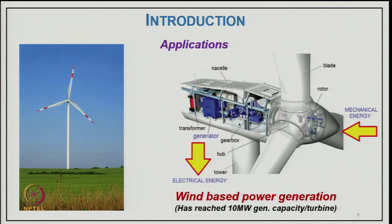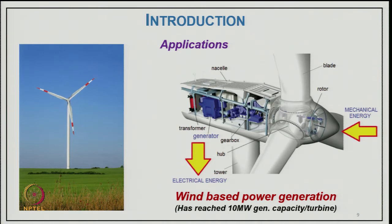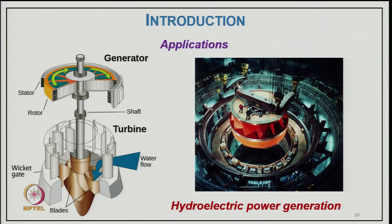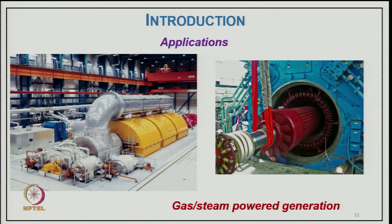Mechanical energy from wind turning the turbine blades is converted to electrical energy through the wind generator, along with accessories like a transformer. Another application is hydroelectric power generation, where water flow acts on the turbine blades through the wicket gate, and on the same shaft a generator with stator and rotor converts mechanical to electrical energy. Another example is gas or steam power generation in a thermal power plant, also converting mechanical to electrical energy.